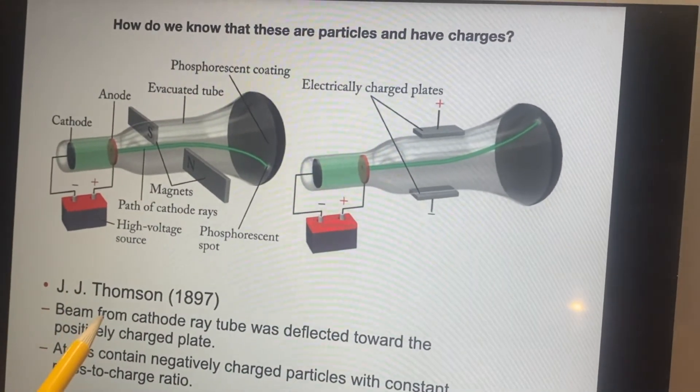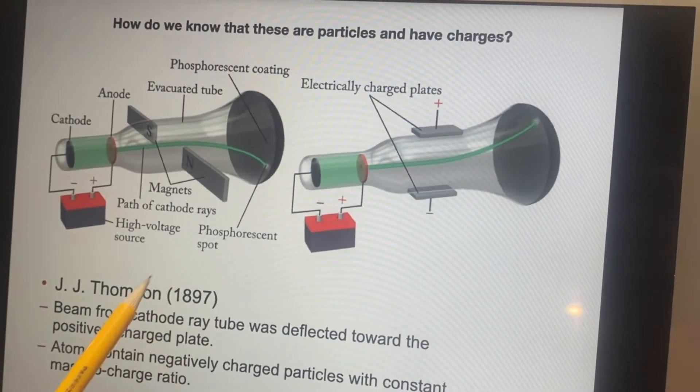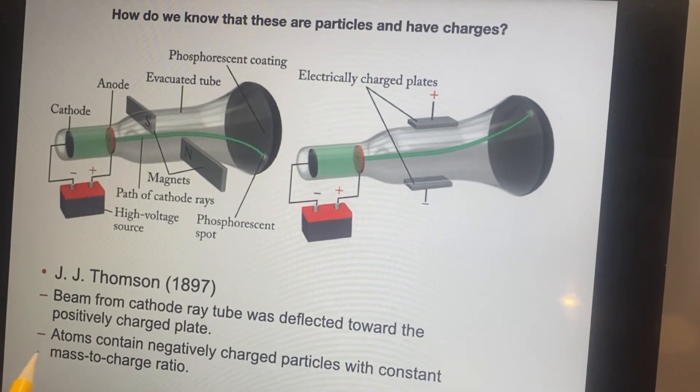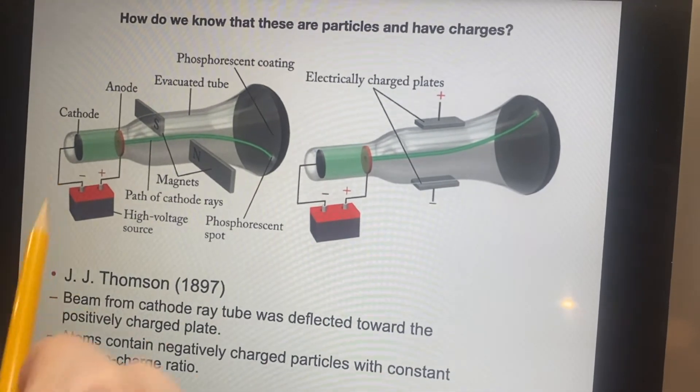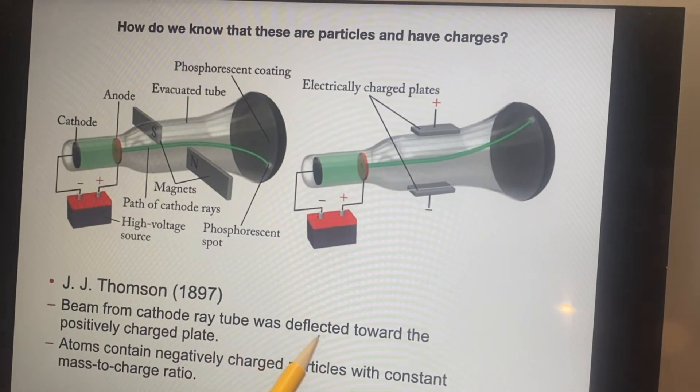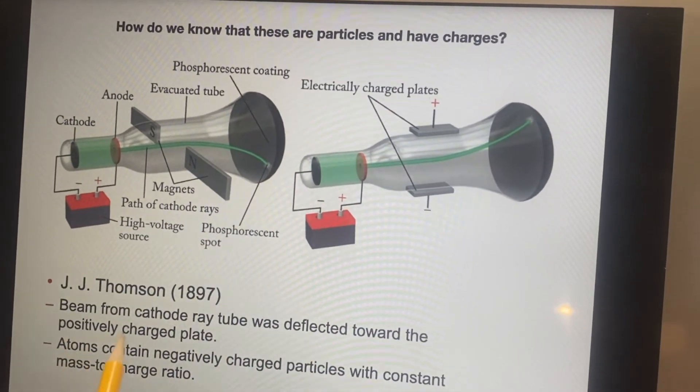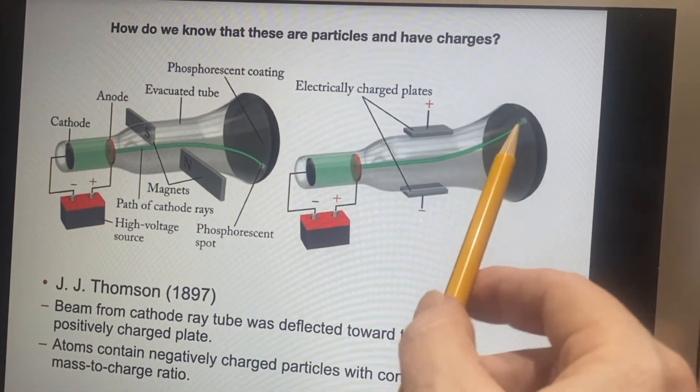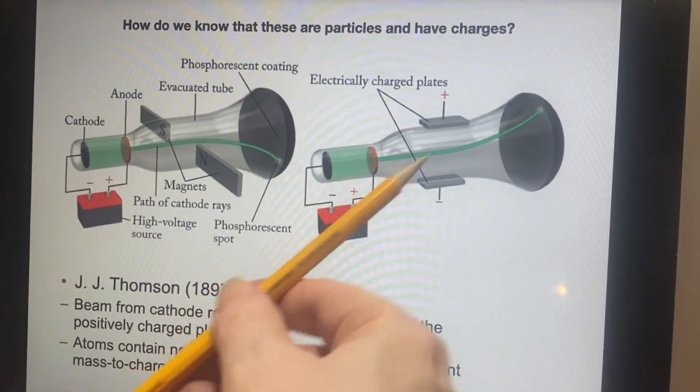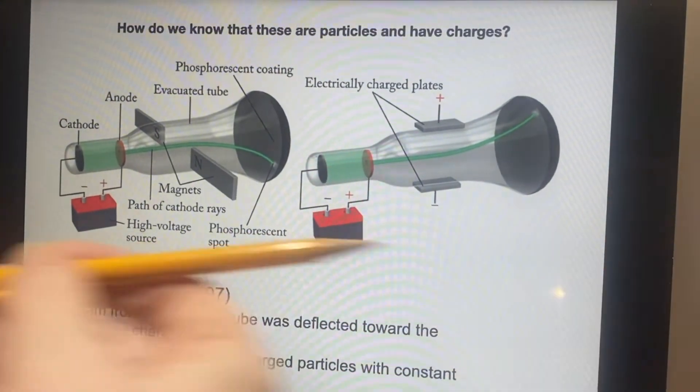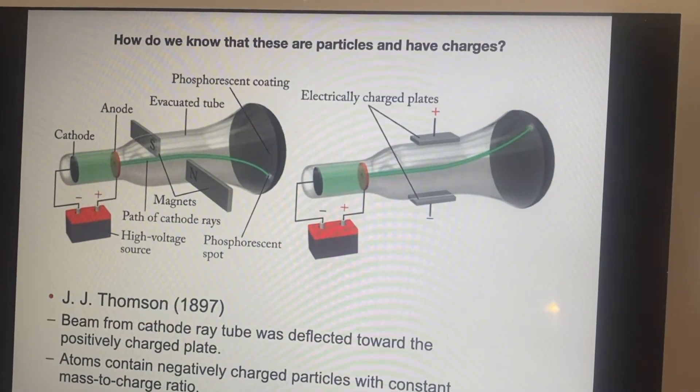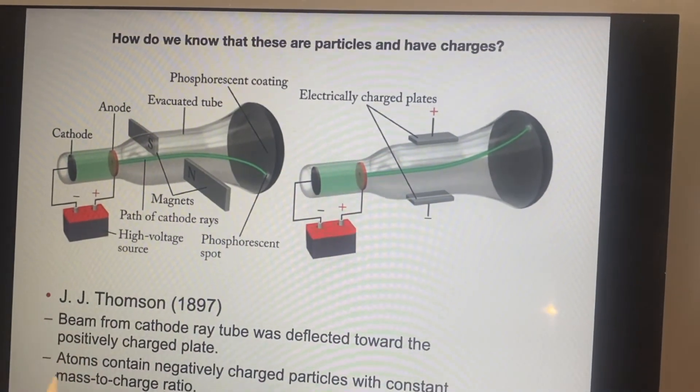So, J.J. Thompson was responsible for doing this sort of experiment before 1900 still. And what he could observe then, when he was doing this work, is that the beam from the cathode ray tube was deflected toward the positively charged plate. Well, if it's attracted to a positively charged plate, it's just going too fast to actually land there. It keeps going, but it ends up getting curved. And if it's being attracted to a positive, it must have a negative charge.